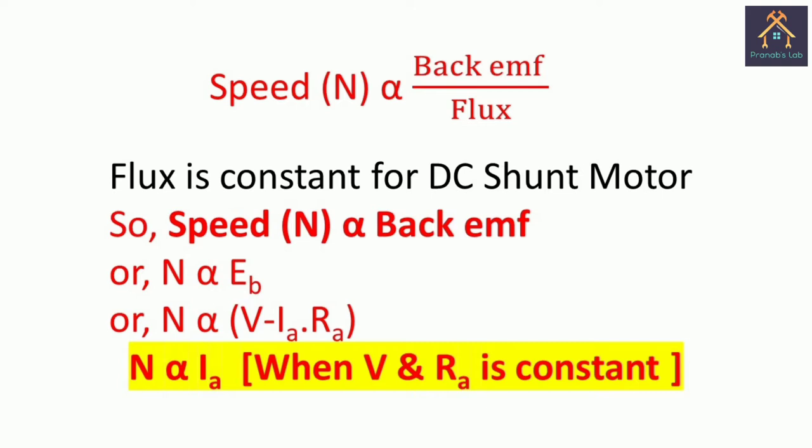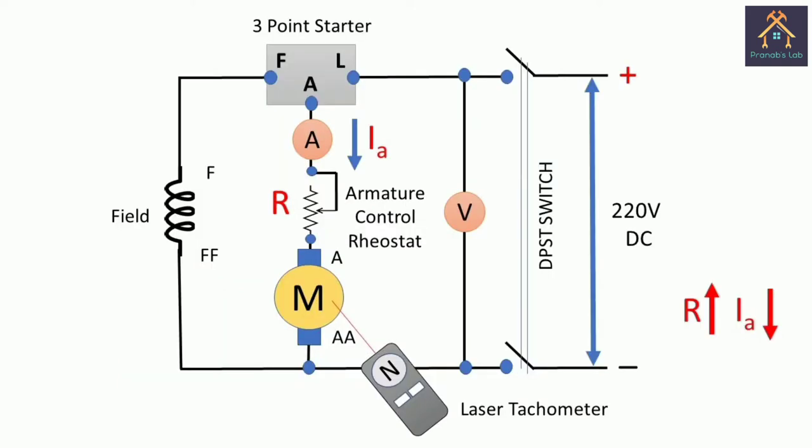Flux is constant for a DC shunt motor. So we can say that n is directly proportional to Eb, or we can say that n is directly proportional to Ia. That is, speed is directly proportional to armature current. If the armature current is increased, then the speed will be increased. And if the armature current is decreased, then the speed will be decreased. For this test, we will control the armature current by increasing the resistance of the armature circuit by means of the rheostat.